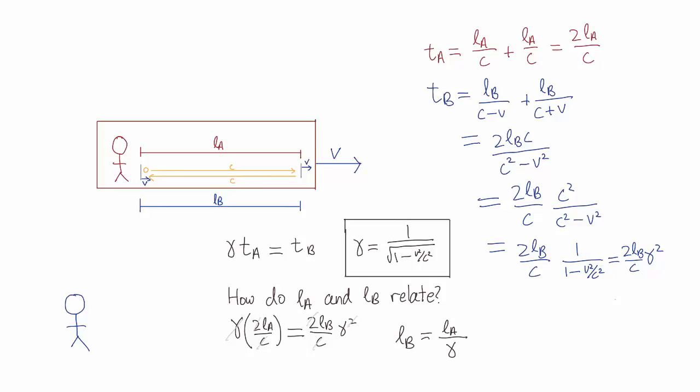Since γ is always greater than one, that means Bob measures the length to be shorter. Bob sees Alice to be what we call length contracted.